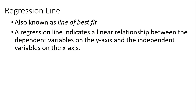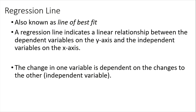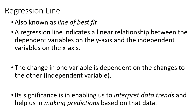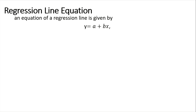Since the two variables are linearly related, we can find the equation of their line. The change in one variable is dependent on changes to the other variable. This enables us to interpret data trends and make predictions based on that data. We can look at this equation as a function, where one variable is dependent on the other. Our equation is y equals a plus bx.